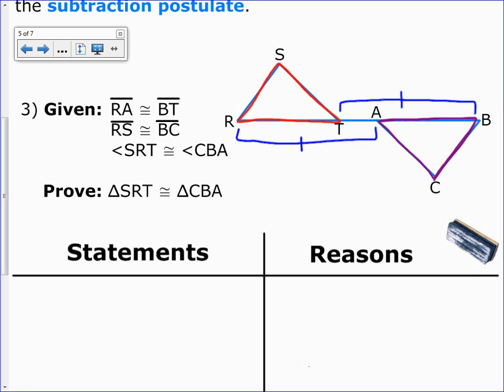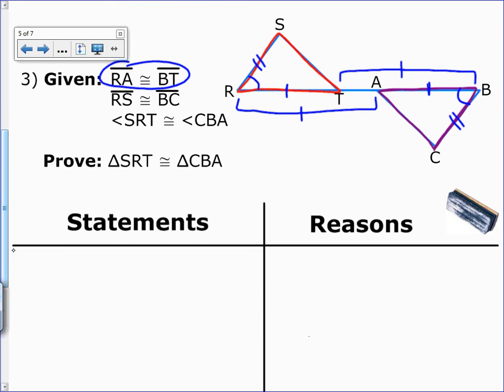We're also given that RS is congruent to BC, and angle SRT, which is over here, congruent to angle CBA. With these subtraction postulates, let's just look at this given again. We were given too much of this piece. But notice, if we take away TA from both of those, we'll get what we want. We'll get then this piece, and if we take TA away from BT, we'll get this piece here, which is exactly what we want. We want to cut it down and make it smaller or subtract.